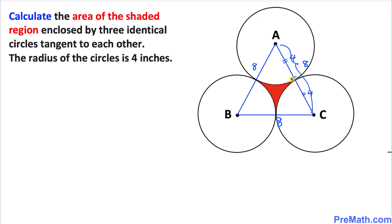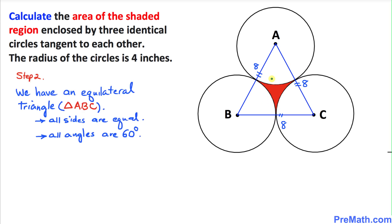That means this triangle ABC is an equilateral triangle — all sides are the same, which are eight inches each. And since this is an equilateral triangle, all angles are going to be 60 degrees each. Just keep that in mind.